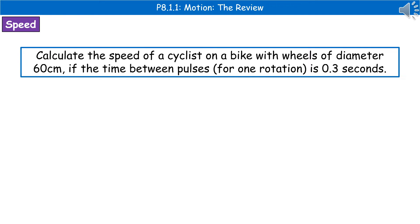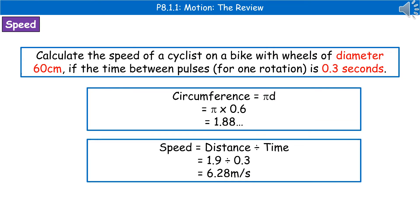A second, more complex way they could ask you to calculate speed: calculate the speed of a cyclist on a bike with wheels of diameter 60 centimetres if the time between pulses for one rotation is 0.3 seconds. First, highlight or jot down the key bits of information and double-check the units — in this case the diameter is in centimetres, so we need to convert it to metres by dividing by 100.